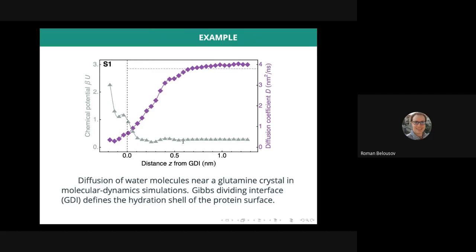As the coordinate, we use the distance to the Gibbs dividing interface that delimits the protein hydration layer from the rest of the liquid water. In this instance, you can see that at nanometer lengths away from the Gibbs dividing interface, we recover the diffusivity of the bulk water, the purple curve here with diamonds. The diffusivity of the bulk water at the simulation conditions is about 4 nanometers squared per nanosecond. Close to the protein surface, the diffusion of water molecules slows down, and near the Gibbs dividing interface, it is by an order of magnitude slower than in the bulk liquid.